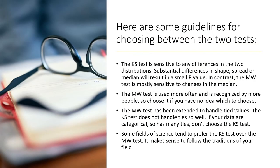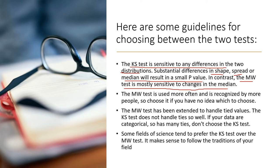When deciding which test to use — whether KS over Mann-Whitney or Mann-Whitney over KS — consider the following: the KS test is sensitive to any differences in the two distributions. Any substantial difference in shape, spread, or median will result in a small p-value. In contrast, Mann-Whitney is most sensitive to differences in the median. So Mann-Whitney focuses on the median value, while the KS test focuses on the highest differences across the entire distribution.